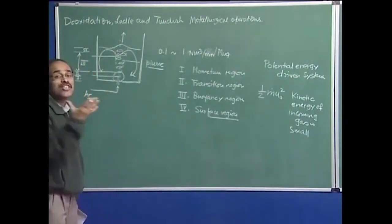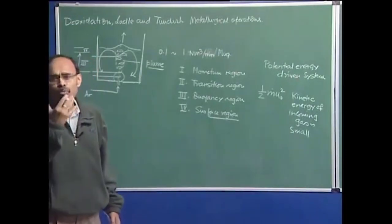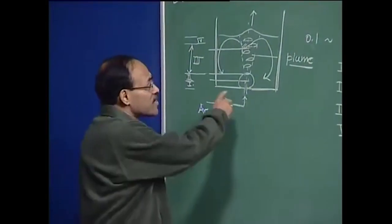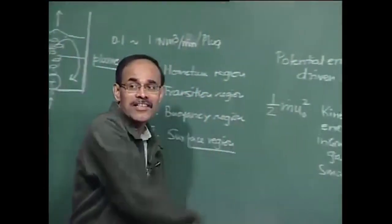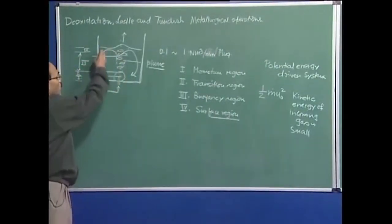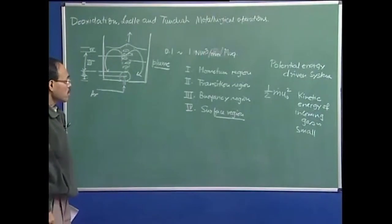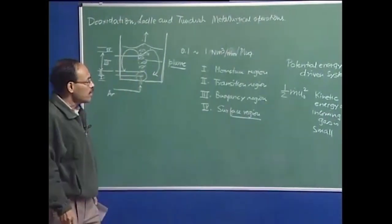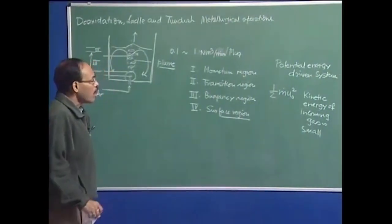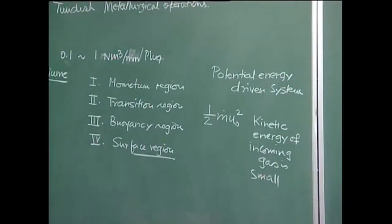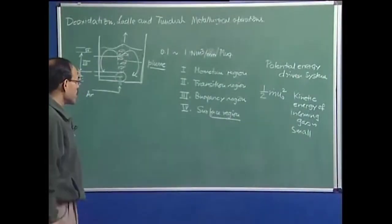For example, an oxygen steelmaking converter — OBM, where we have bottom-blown oxygen steelmaking — is certainly not potential energy driven. There the kinetic energy of the injected gas plays an important role in the extent of flow recirculation produced, because the gas injection rate or flow rate is very, very large. Let me give you an expression of this potential energy, and then we will try to compare both values by putting some magnitude of free stream velocity and mass flow rate.